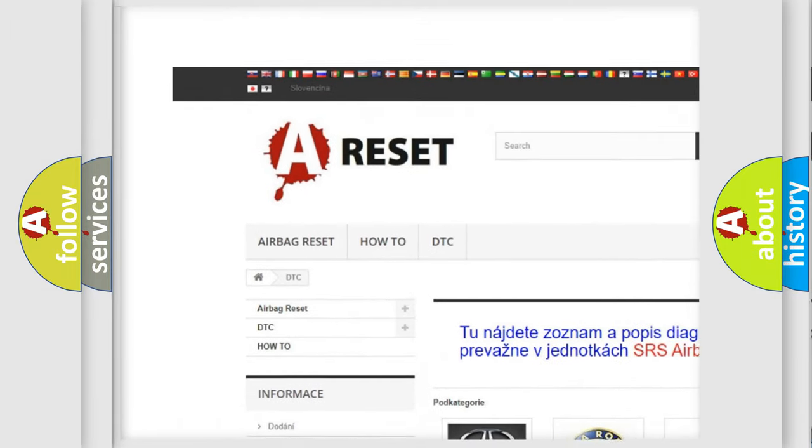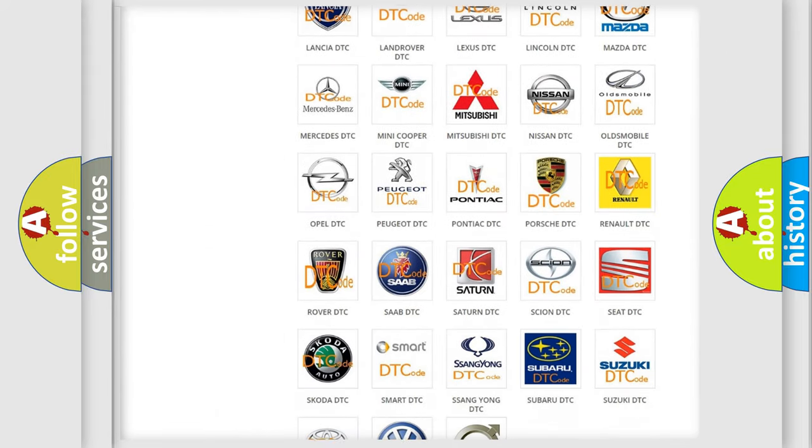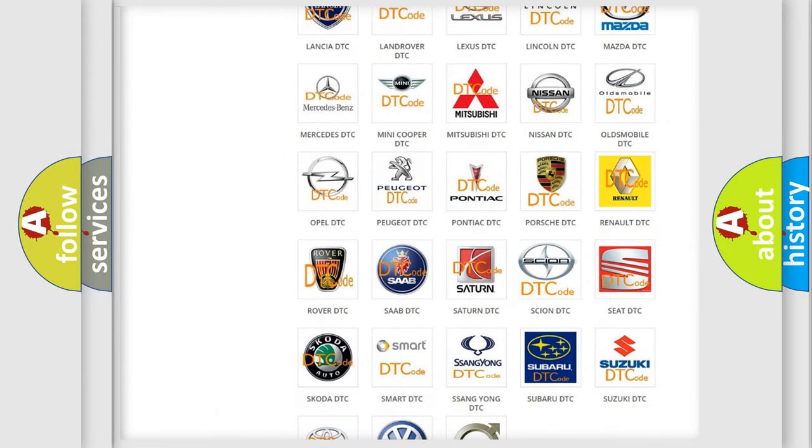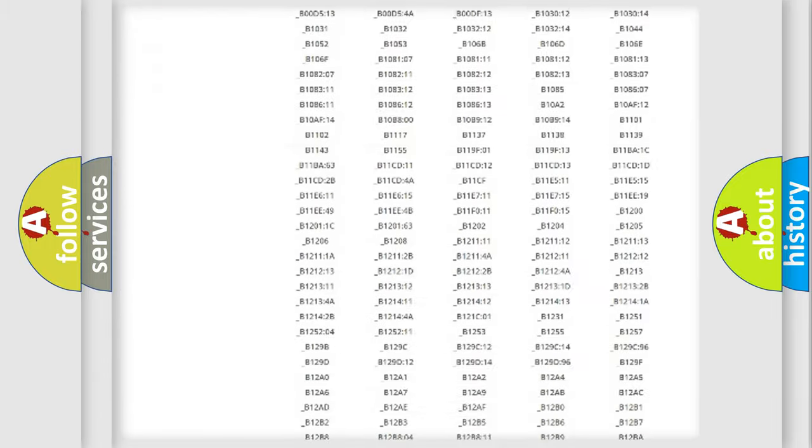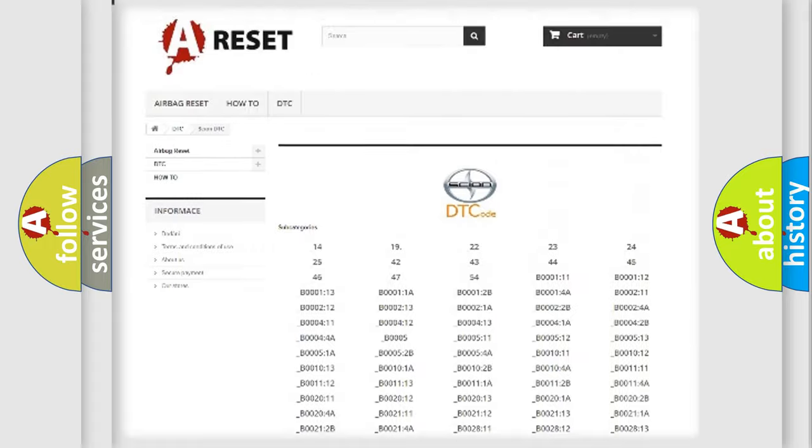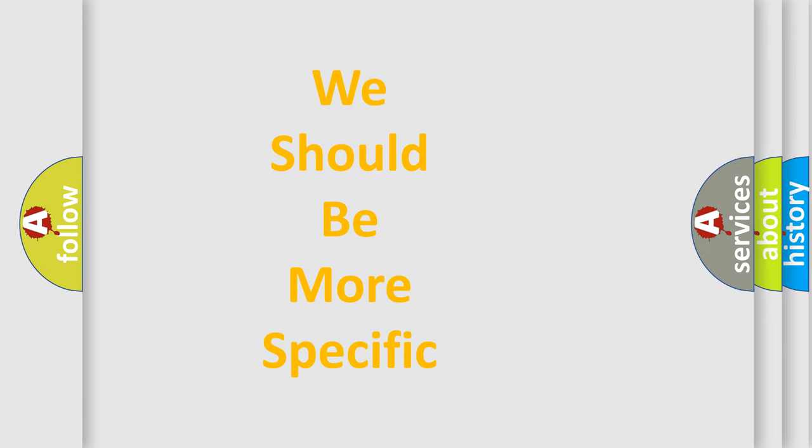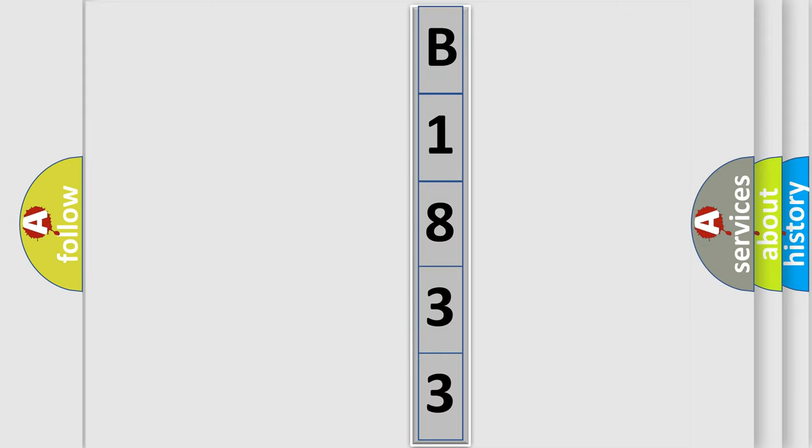Our website airbagreset.sk produces useful videos for you. You do not have to go through the OBD2 protocol anymore to know how to troubleshoot any car breakdown. You will find all the diagnostic codes that can be diagnosed in Scion vehicles, and many other useful things.